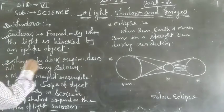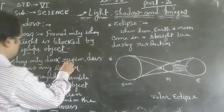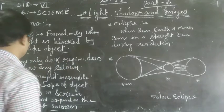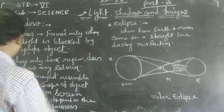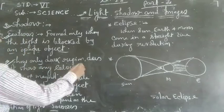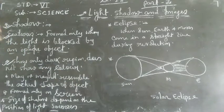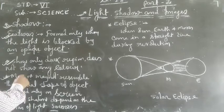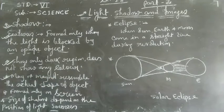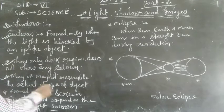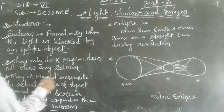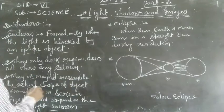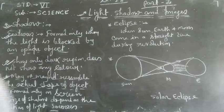Shadow does not show any color — there is no color of shadow. Its color is only black. Next feature: shadow may or may not resemble the actual shape of the object.